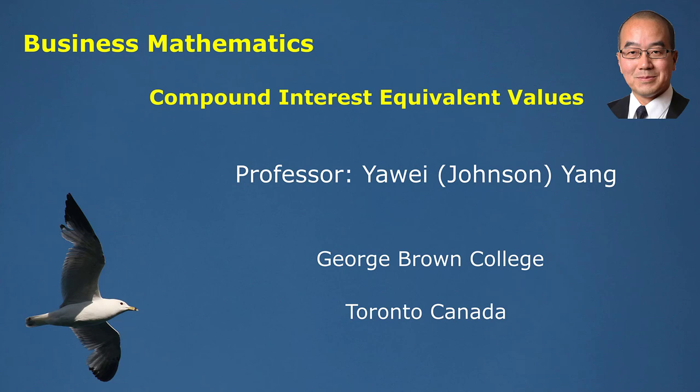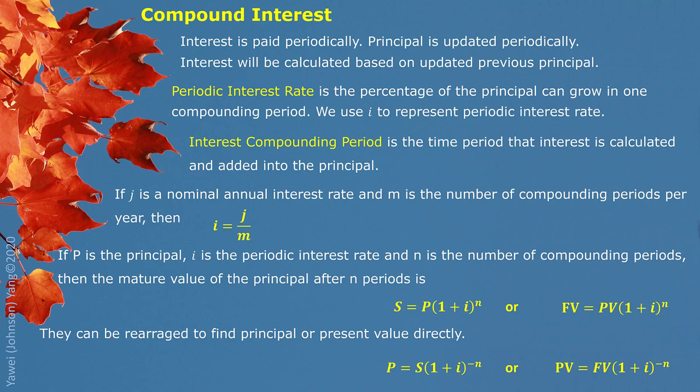Hello everyone. Here we talk about compound interest equivalent values. Quick review about compound interest: we have periodic interest rate, we have interest compounding period, and the periodic interest rate comes from the annual interest rate divided by the number of compounding periods per year.